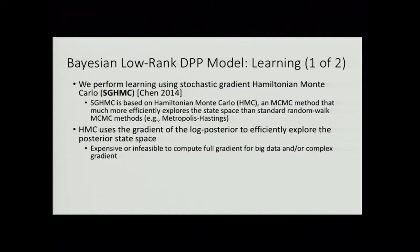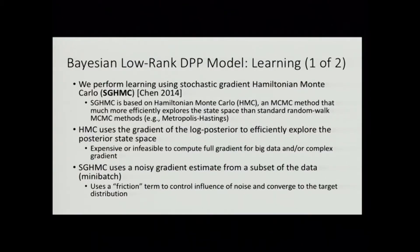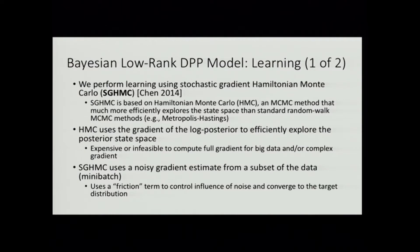The potential problem with conventional HMC is that we have to compute the full gradient over the entire training set, which becomes expensive or infeasible for large data or a complex gradient. SGHMC addresses this issue by computing noisy gradient estimates on mini-batches drawn from the training data. SGHMC uses a friction term to control the influence of noise and converge to a good estimate of the target distribution. If you naively use stochastic gradients in this framework, you converge to something very far from the target, but the friction term ensures convergence to a good approximation of the actual posterior.